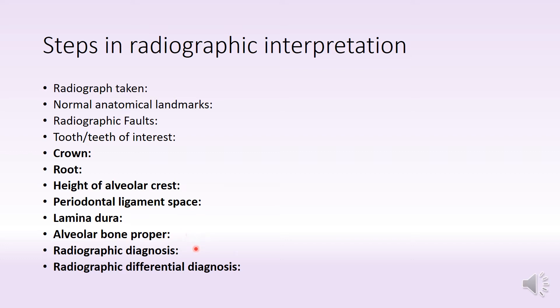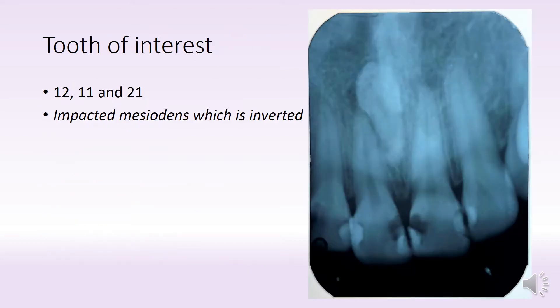height of alveolar crest, periodontal ligament space, lamina dura, alveolar bone proper, radiographic diagnosis, and finally the differential diagnosis. Here we have an interesting radiograph as you can see.